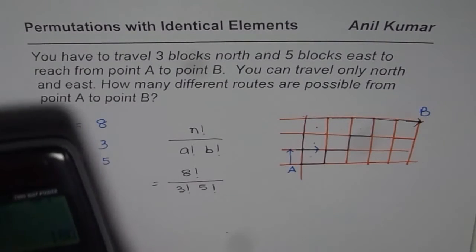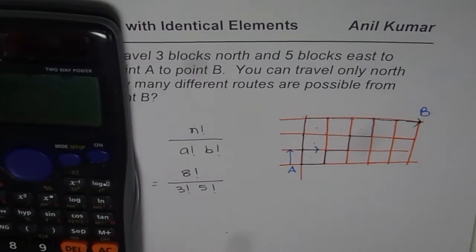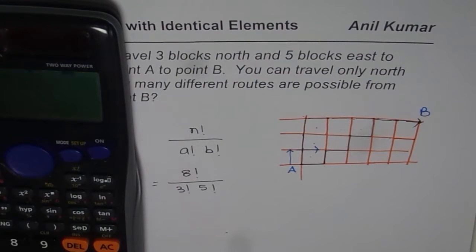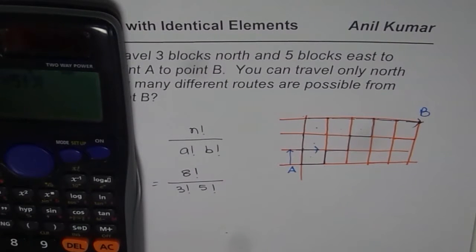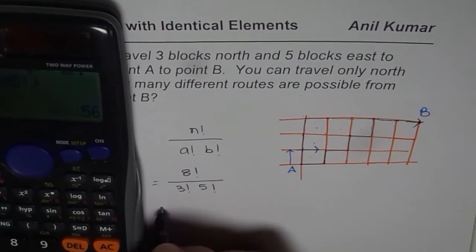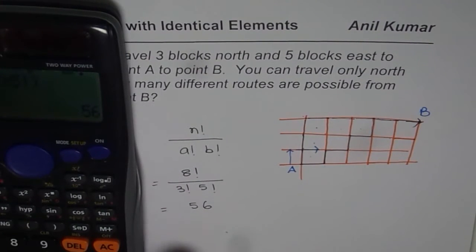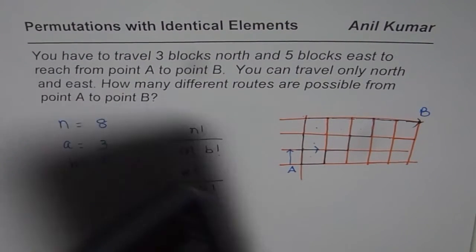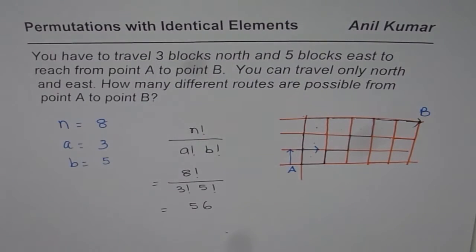Let us use the calculator to find the answer. We have 8 factorial divided by, within brackets, 3 factorial times 5 factorial. The result equals 56. So we get 56 as our answer for this particular problem.